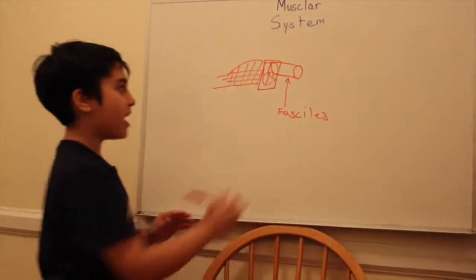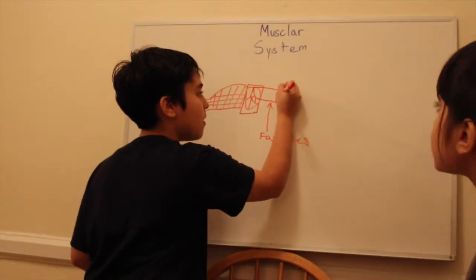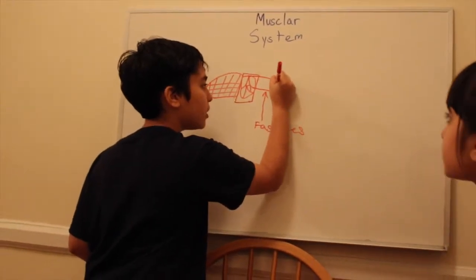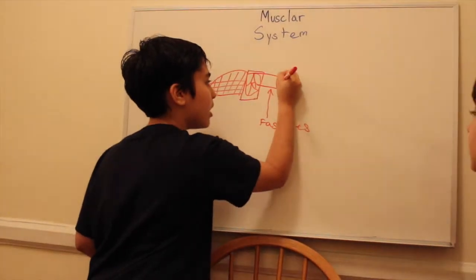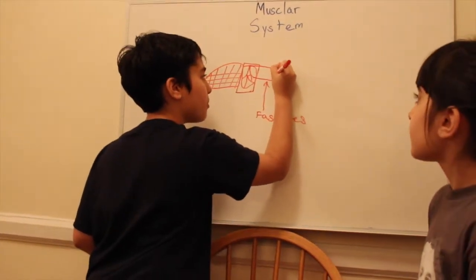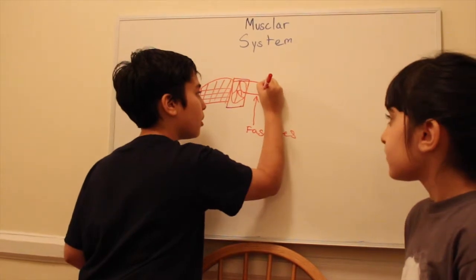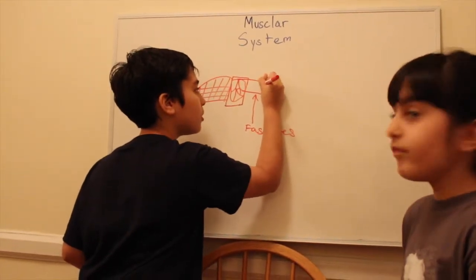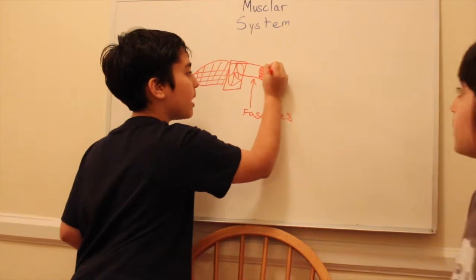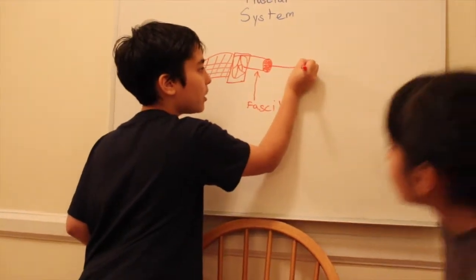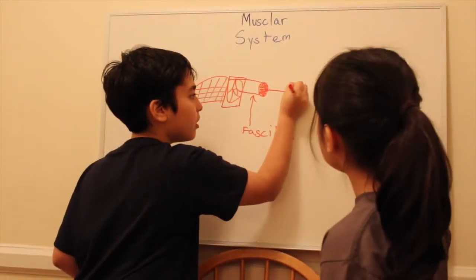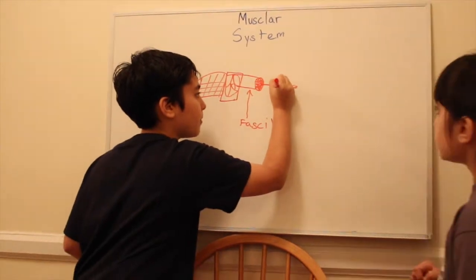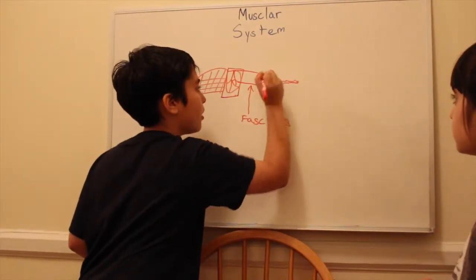And when you see the fascicles, there will also be tiny circles in there. And those circles are very important because those are the muscle cells, also called myofibers. So let's pull them out and we'll realize there are a few bumps on it.